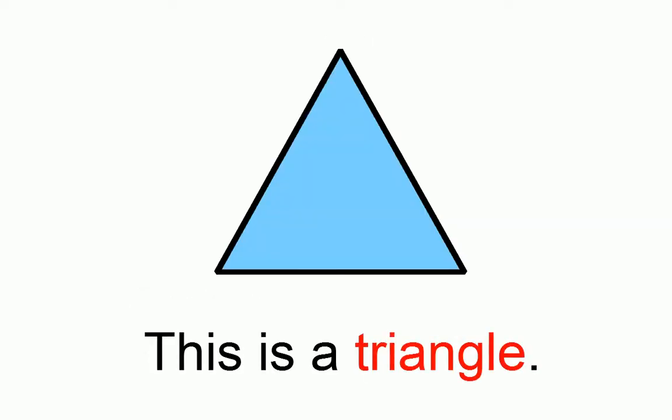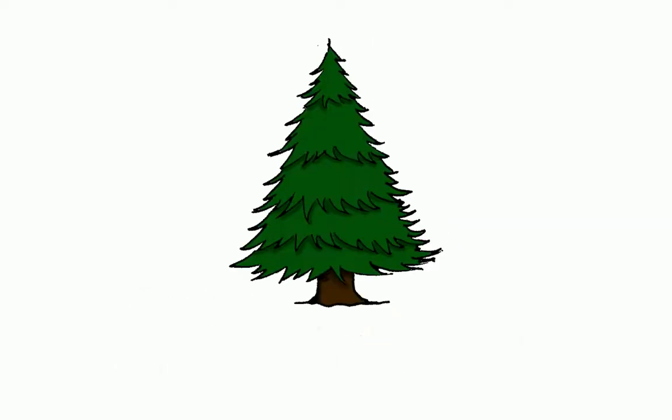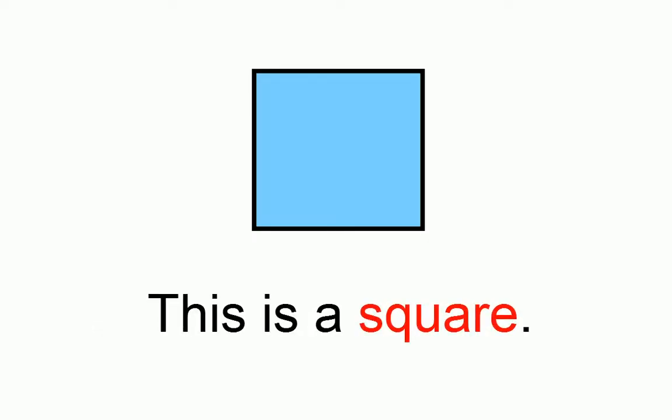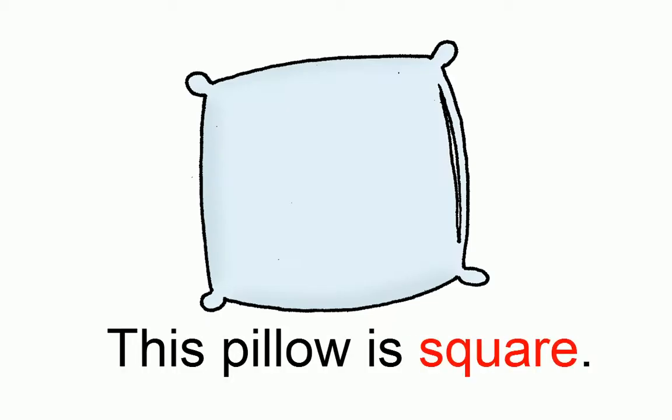This is a triangle. This tree is triangular. This is a square. This pillow is square.